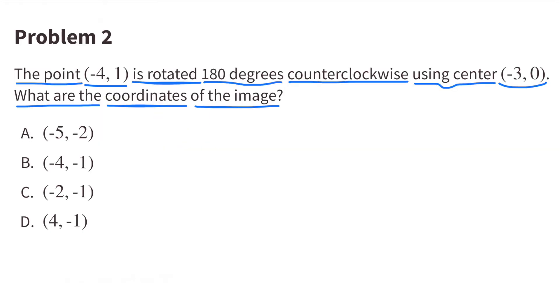Number 2. The point negative 4 and 1 is rotated 180 degrees counterclockwise using center negative 3 and 0. What are the coordinates of the image?